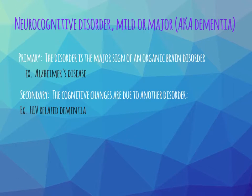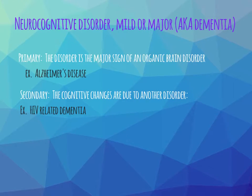Now that we've defined delirium, we can differentiate it from dementia. Neurocognitive disorder—mild or major—is the term that replaced both mild cognitive impairment and dementia. There are two basic types of neurocognitive disorder. There is the primary, where the disorder itself is the major sign of an organic brain disorder that is progressive—for example, Alzheimer's disease. And then we have secondary dementias, where the cognitive changes are due to another disorder—for example, HIV-related dementia, Korsakoff's psychosis, or Wernicke's encephalopathy, which cause dementias related to alcohol abuse.